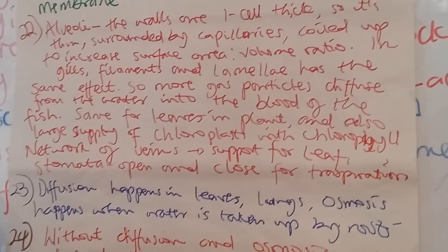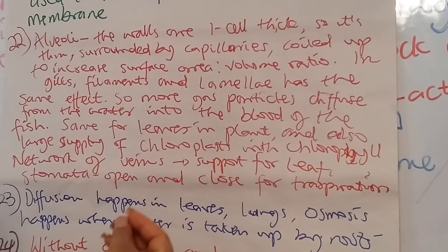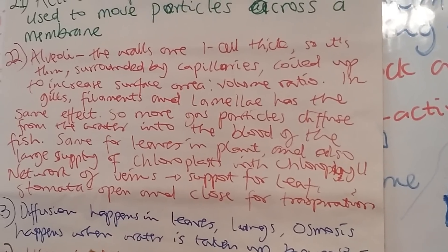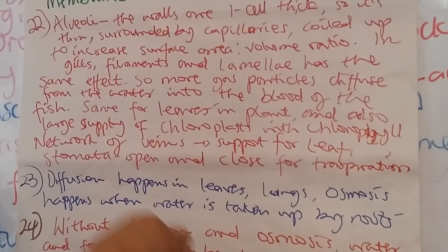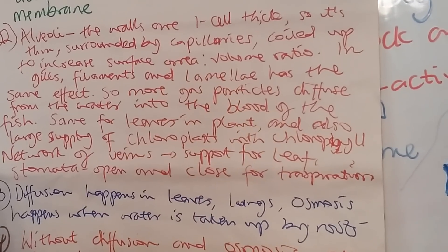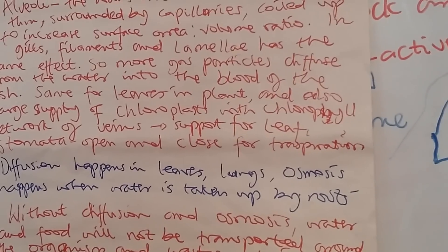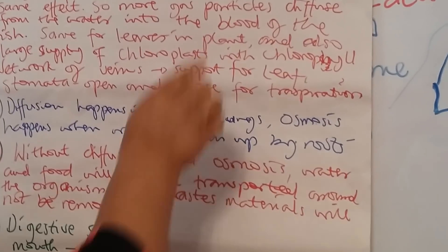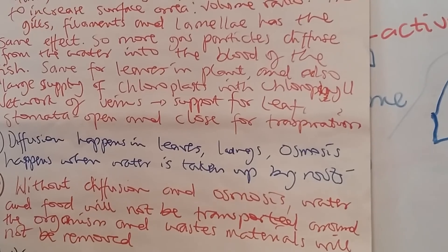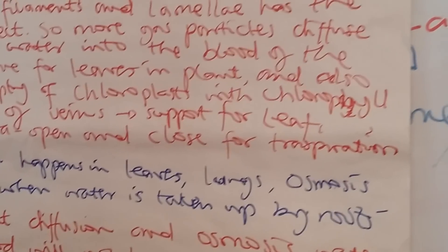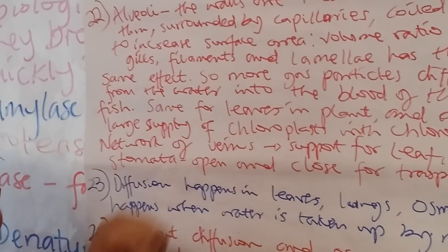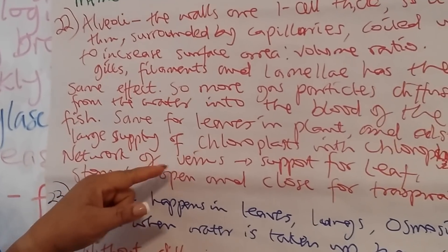The alveoli are coiled up tightly into little air sacs, which creates a large surface area. If you were to collect all of them and spread them out, even though they fit into a tiny space they are actually very large, creating an efficient surface area to volume ratio for diffusion. The same principle applies in gills — the filaments and laminae have the same effect, so gas particles diffuse from the water into the blood of the fish.